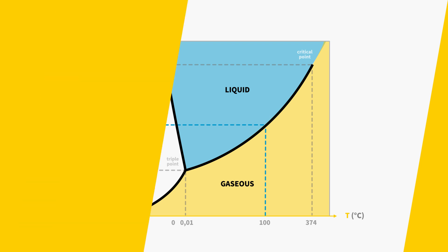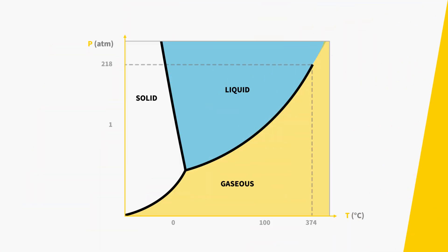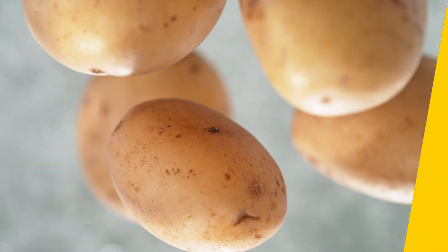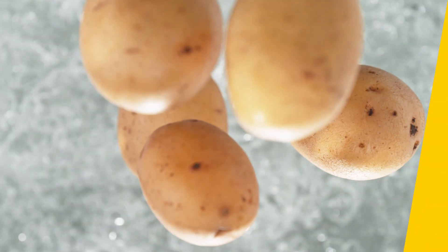You can also use another approach: produce steam by vaporizing water at a fixed temperature. Let's say you want to generate steam at 50 degrees Celsius. The same graph shows that water will vaporize at that temperature if the pressure drops to 0.1 bar absolute. Of course, this is only possible by creating a vacuum in the tank holding the water.